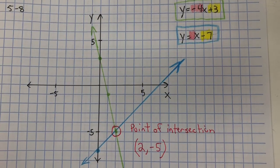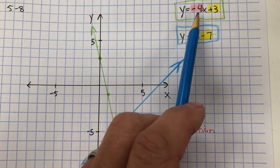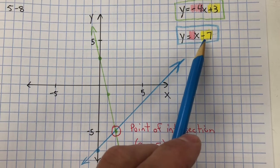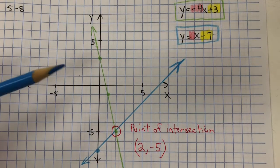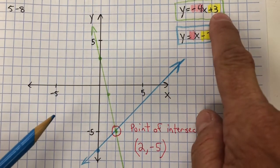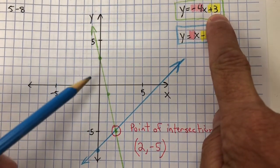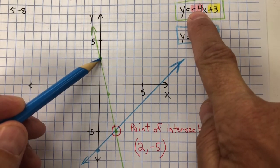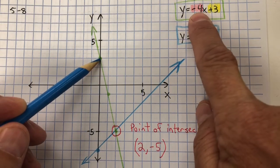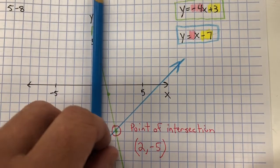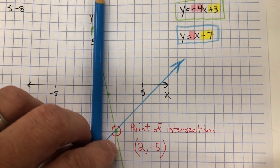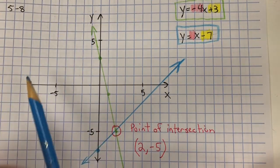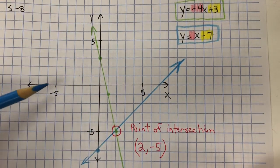For problem 5-8, I needed to graph the lines Y equals negative 4X plus 3 and Y equals X minus 7. So for the first one, here's my Y-intercept on the Y-axis, a positive 3: 1, 2, 3. And my rate of change is negative 4X. So remember, the tree is going to be falling towards the negative X's. So you know that it's going to be slanting towards the negative X's.